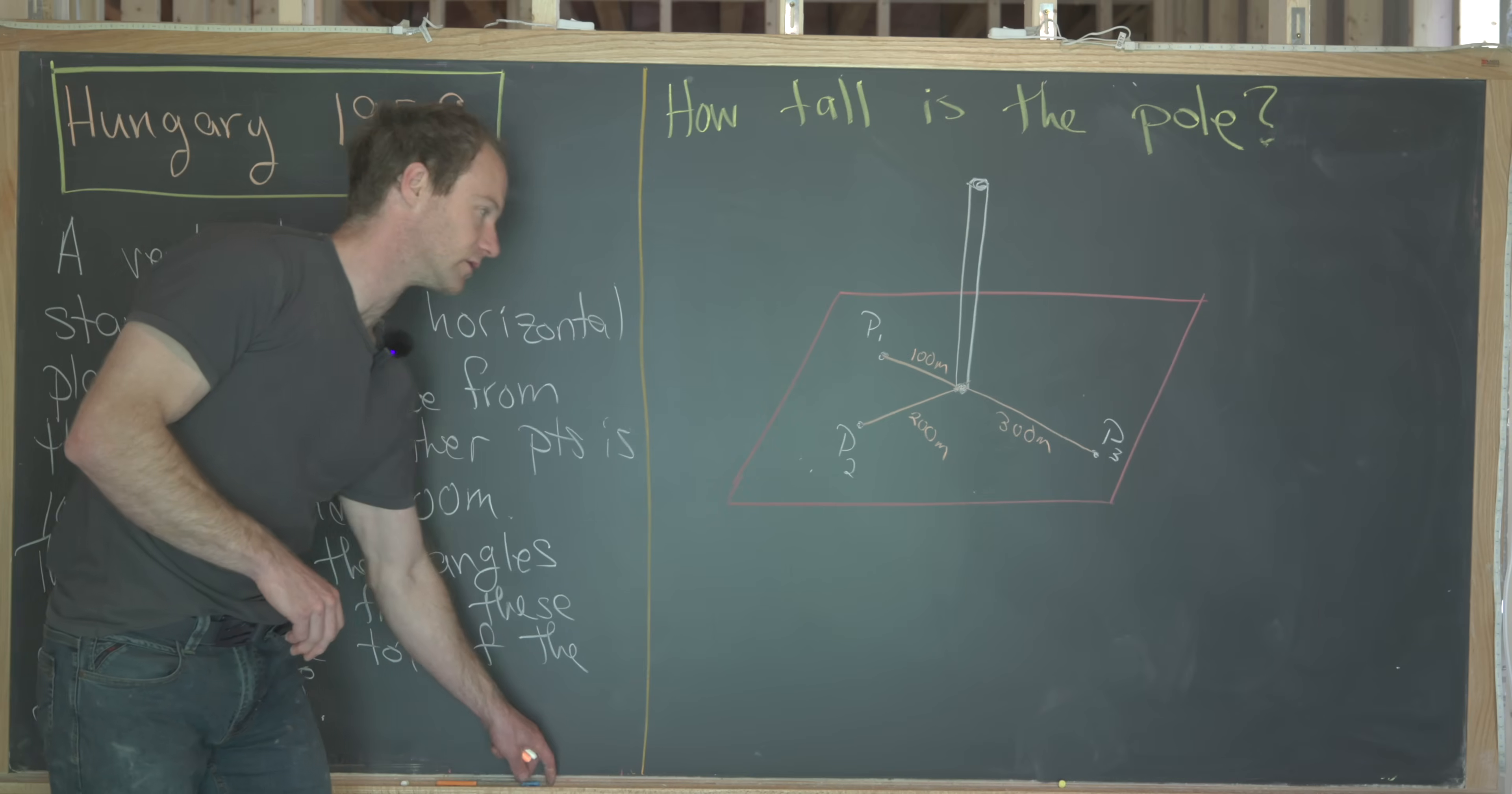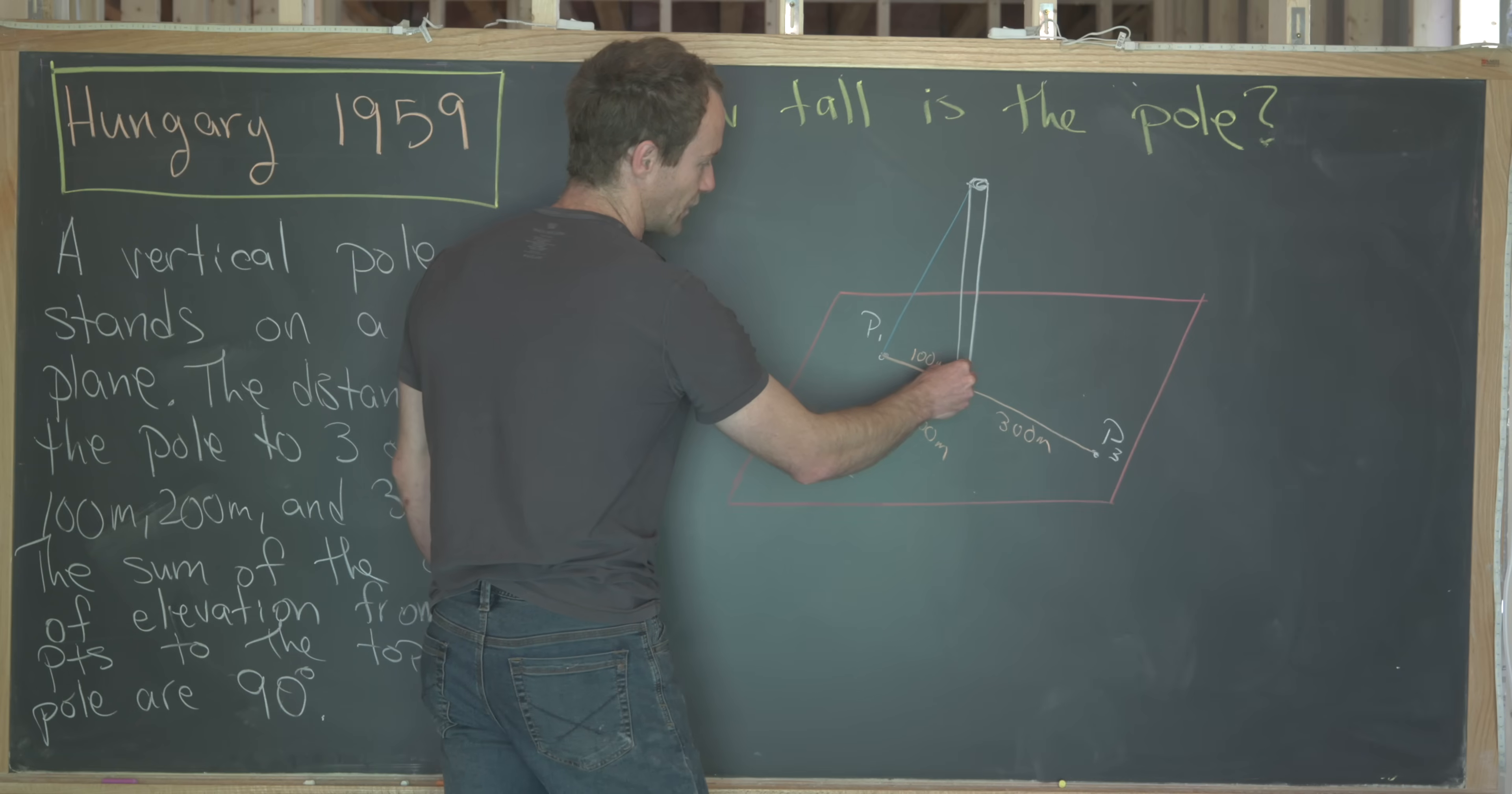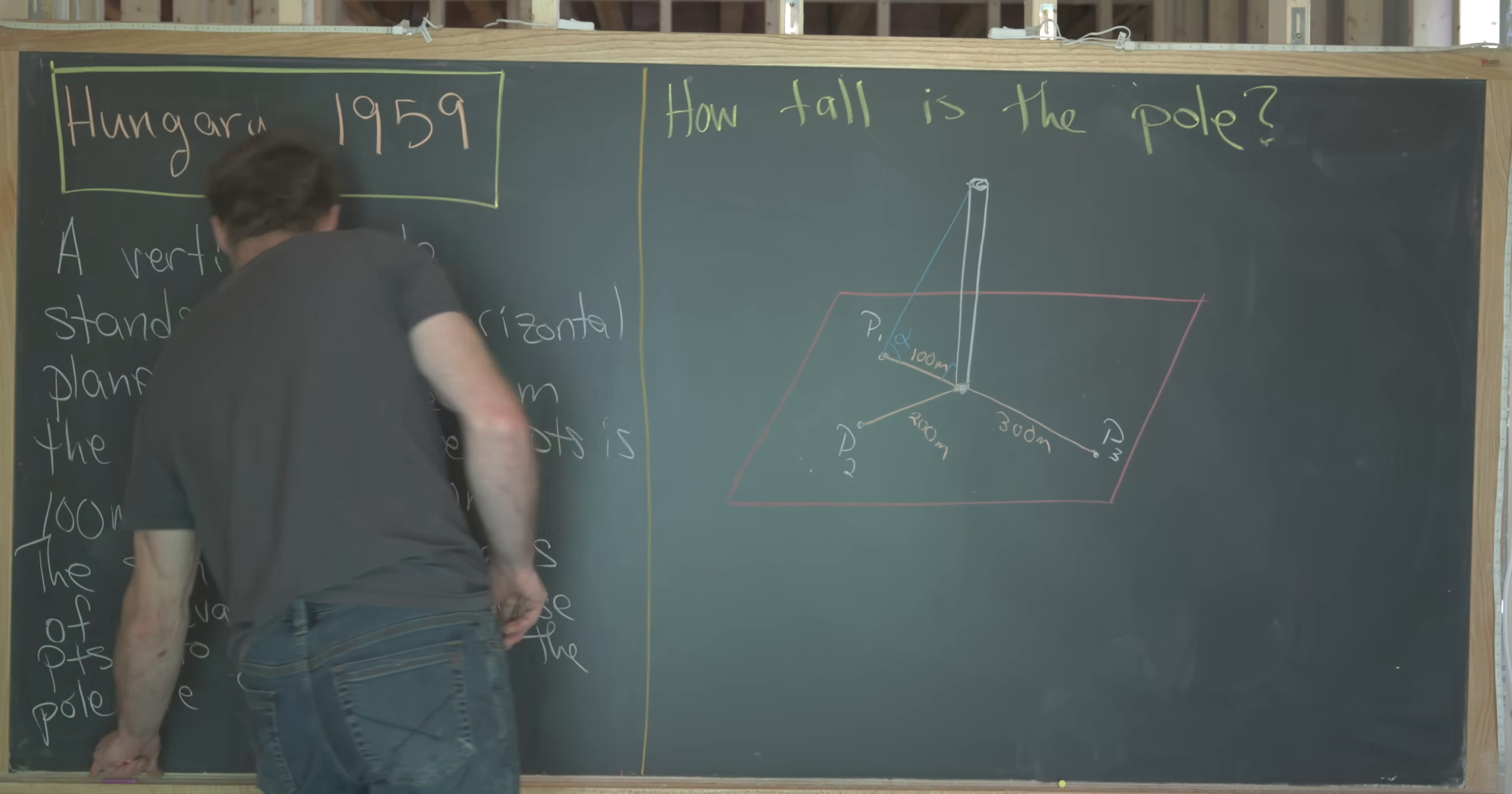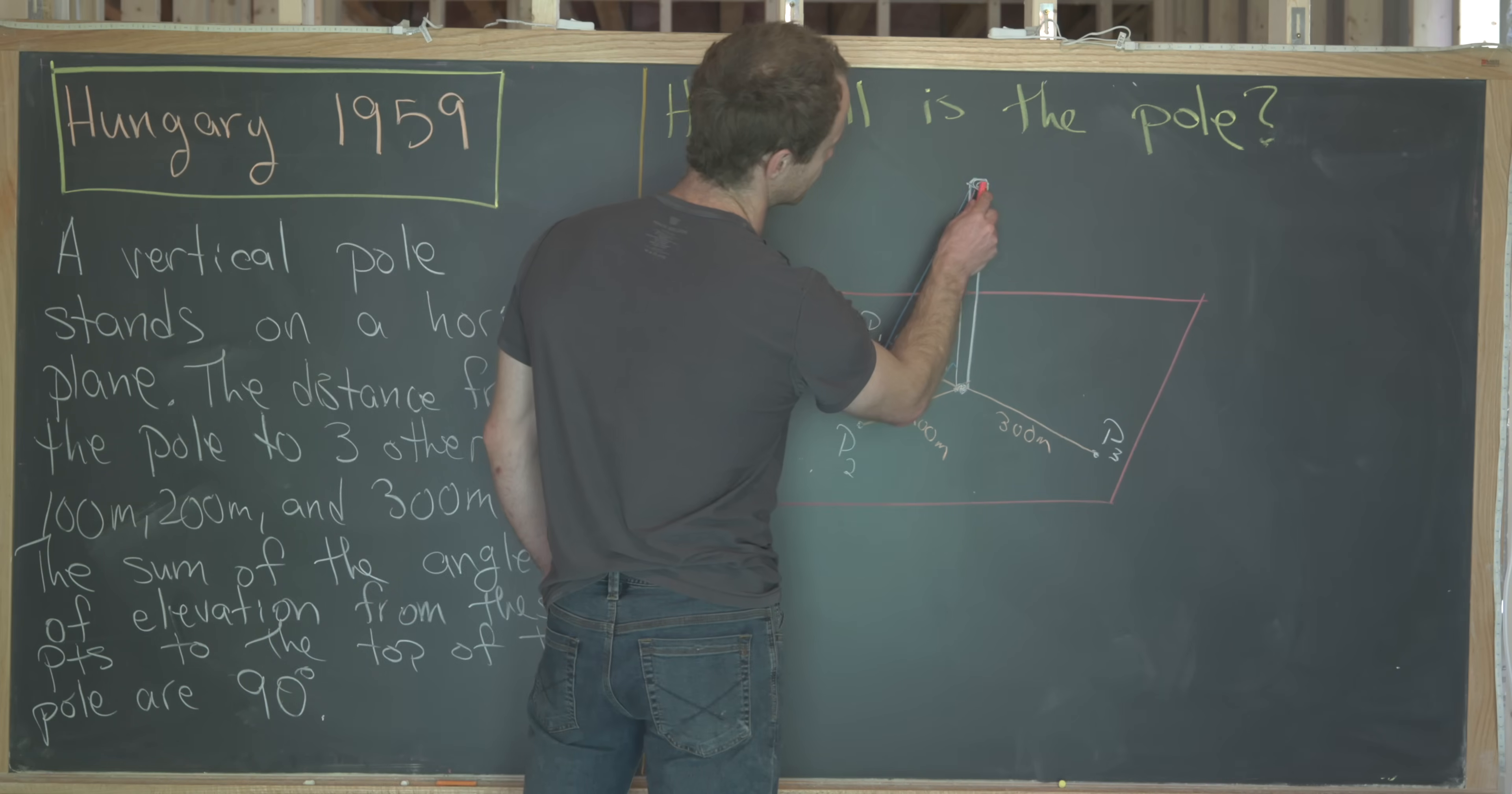So now let's get those angles that the problem told us about into this situation. We'll do that by completing some triangles. So we'll complete this triangle like this. We know that this is a right angle, given that we have a horizontal plane. We'll call this angle right here alpha. And then we'll complete a triangle right here between the top of the pole and P2. We'll call this angle beta. And then we'll finally complete a triangle from the top of the pole to P3. And we'll call that angle gamma.